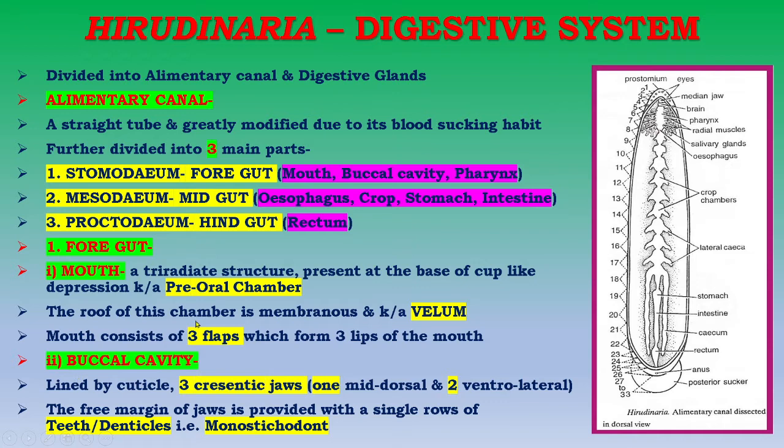The second part of the stomodium is the buccal cavity. The mouth opens into the buccal cavity, which is lined by cuticle. It contains three crescentic jaws — one mid-dorsal in position and the other two ventrolateral in position. The free margin of the jaws is provided with a single row of teeth or denticles.